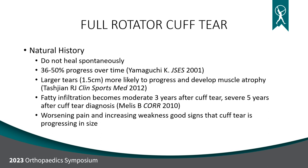Natural history of full tears: once torn, always torn — the body cannot bridge that gap. 35 to 50% of tears will get bigger over time, with larger tears more likely to progress. Over time, fatty infiltration and muscle atrophy develop — even by three years after onset of tear. By five years, atrophy can become severe enough that we are no longer able to repair the rotator cuff. Worsening pain and increasing weakness are good signs the tear is progressing.